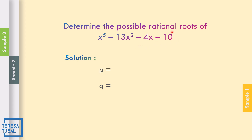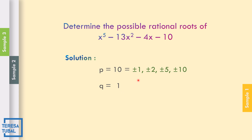The constant term is considered as p, which is 10. The leading coefficient is considered as q, which is equal to 1. So, let us omit the sign and get the factors of 10. The factors of 10 are positive-negative 1, positive-negative 2, positive-negative 5, and positive-negative 10.